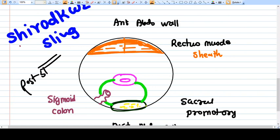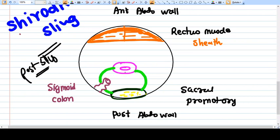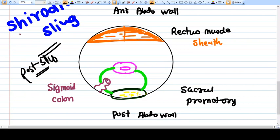And what material we use for creating this sling is Mersilene tape. What we do here is we just fix the posterior wall of cervix to the sacral promontory. But the problem here is on the left side we have a sigmoid colon, so we need to bypass through using a hook and create passage and attach to the sacral promontory.